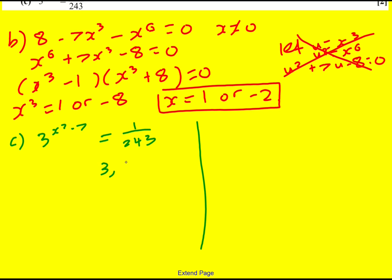So 3, 3 squared, 3 cubed, of course you can do this on your calculator, 3 to the power of 4, 3 to the power of 5 is 243.